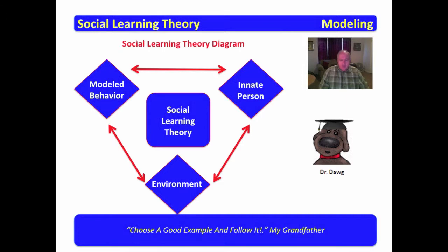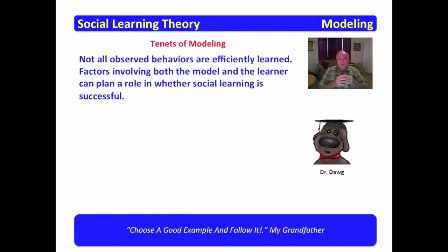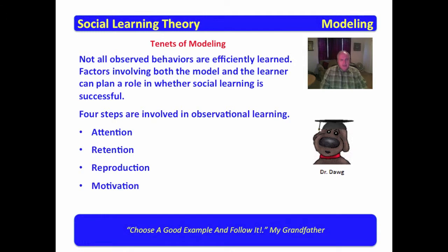I remind you there is no right process. There is no right methodology, but there are many of these theories that are indeed useful and do explain a lot of what we encounter. One of the tenets of modeling is that not all observed behaviors are efficiently learned. Factors involved in both the model and the learner can play a role in whether social learning is successful. Just because you model something doesn't mean someone is going to accept it. There are some concepts that do help when we want to bring about successful modeling. Four steps are generally involved in observational learning. The first of those is attention, then there is retention, reproduction, and motivation.